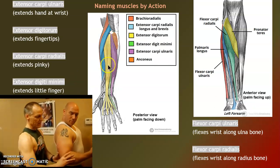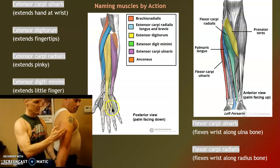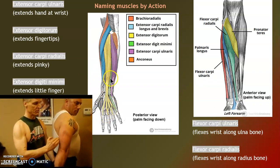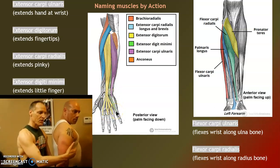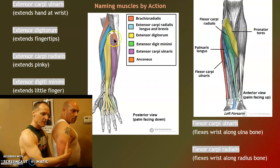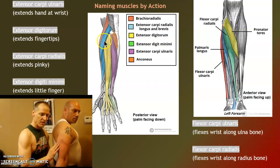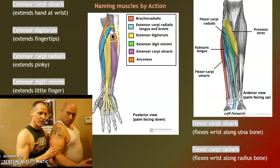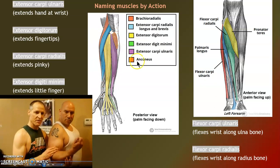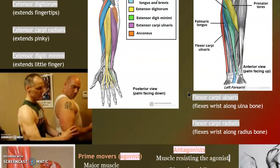Extensor digitorum extends the fingers. Extensor digiti minimi extends the little pinky. Extensor carpi ulnaris is on the ulna side — the elbow side. Radialis is on the radius side. Knowing your bones helps you here. On the anterior view, we have flexors, and their names help you understand their action.